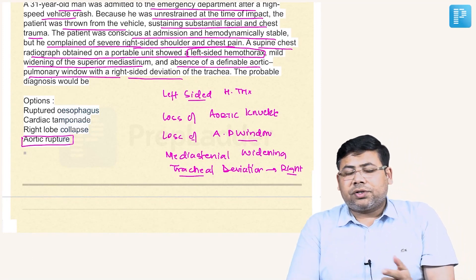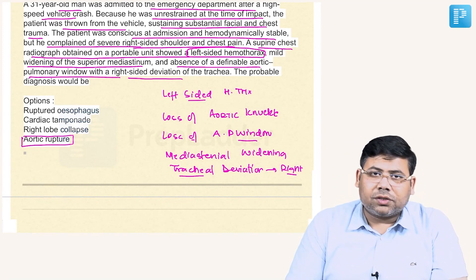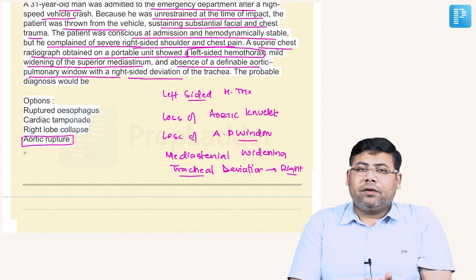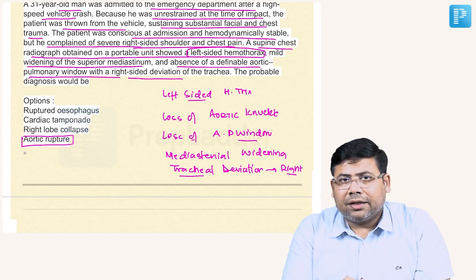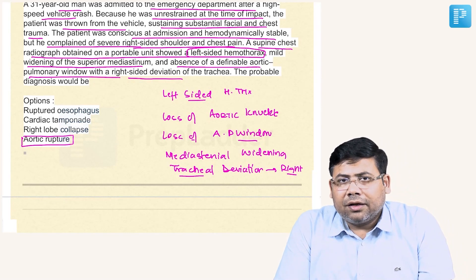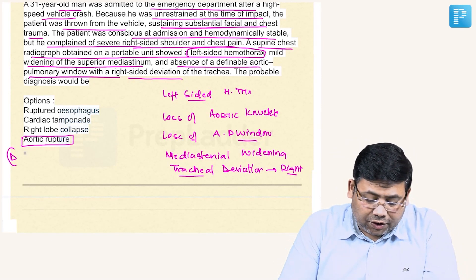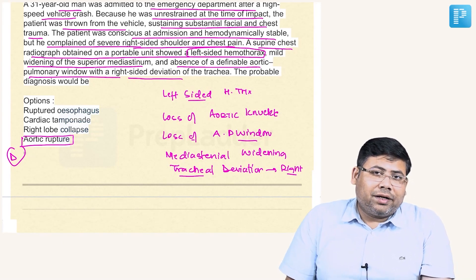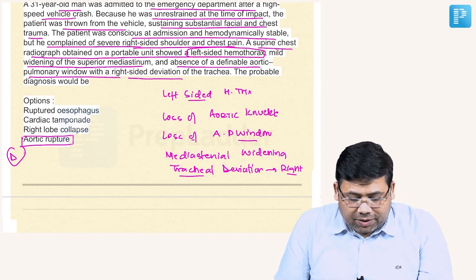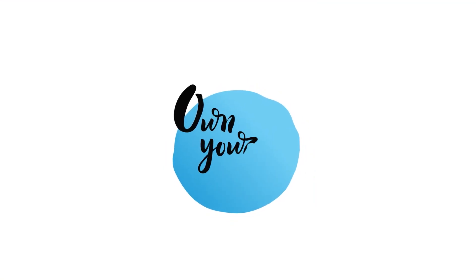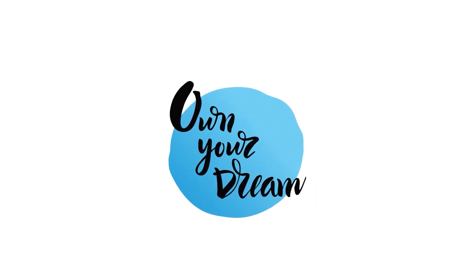Why is this patient hemodynamically stable? Because the rupture is contained under the mediastinal fascia. This is most likely a descending thoracic aortic injury. So the answer is option D. The question may seem long, but it takes only two minutes to decode and explain the concept. Thank you.